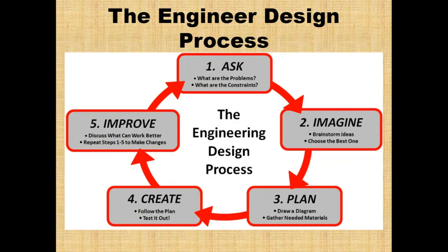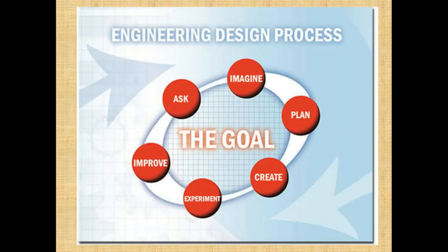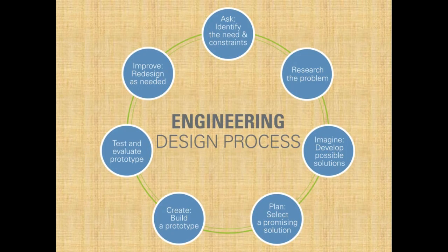As we talk about the engineering design process and its six steps, you will see several other presentations of the design process with either fewer or more steps. Just understand that all of these — whether five, nine, ten, or twelve steps — include the same requirements. For example: ask, imagine, plan, create, and improve. Or: ask, imagine, plan, create, experiment, improve. Or: ask, identify the need and constraints, research the problem, imagine possible solutions, plan a promising solution, create and build a prototype, test and evaluate the prototype, and improve by redesigning as needed.